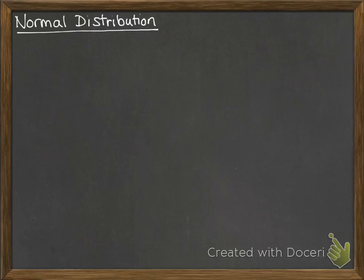Right, normal distribution. Now this is a bit different to binomial distribution. First of all, it's for continuous data, whereas the binomial distribution was for discrete data.